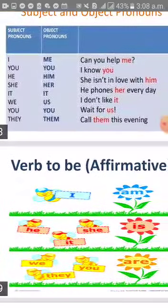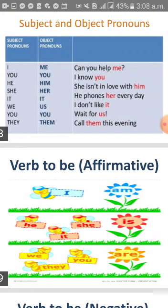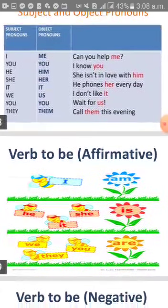Verb 'to be' in the affirmative case. Do you remember? The greedy 'I' takes 'am'. He, she, it take 'is'. While we, they, you come with 'are'. For example: 'She is happy.' Or: 'I am sad.'